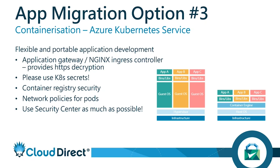Moving on to network policies for pods within Kubernetes — these are very similar in concept to Network Security Groups for virtual machines. Instead of NSGs isolating subnets or VMs, network policies can segregate pods within the Kubernetes cluster. You set up policies to ensure certain applications can't communicate with others if you have data that shouldn't intermingle. By default, any pods in the cluster — even across namespaces — can speak with each other, so if you need isolation you'll need to deploy additional policies. It's up to your workloads whether segregation is needed, but it's a good feature to have available.